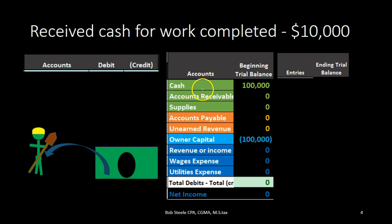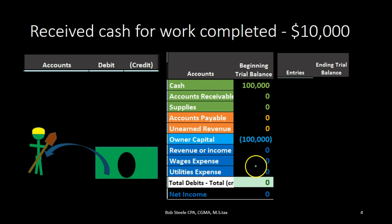At this point in time we have assets here in green, liabilities in orange, and equity in blue including the capital account and the income statement — revenue minus expenses. We have the debits equaling the credits: the $100 cash minus the capital of $100,000. Debits minus credits equals zero and we have no income at this time because nothing is down here in the income statement.